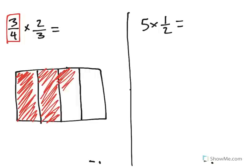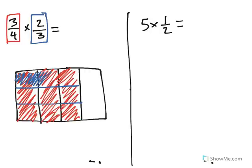Then I'm going to find 2 thirds of that area — 2 thirds of that 3 fourths. I made the last lines vertically, so now I'm going to split those into thirds horizontally, and then shade in 2 thirds horizontally.